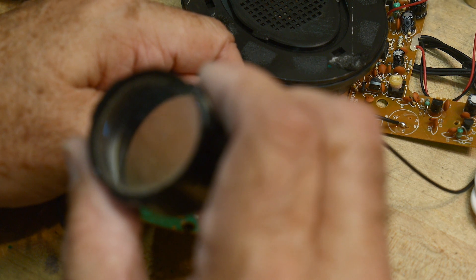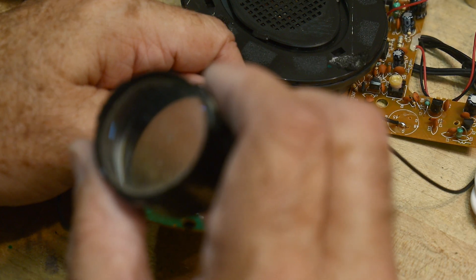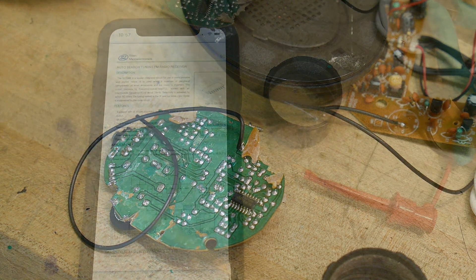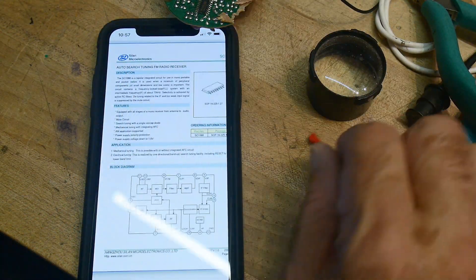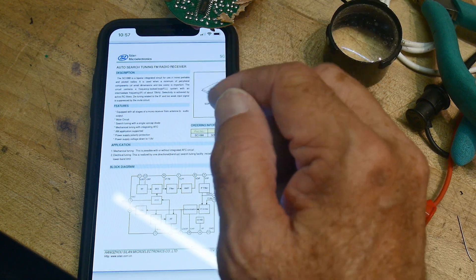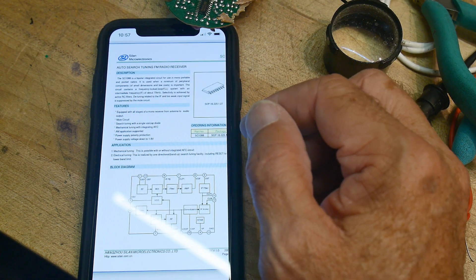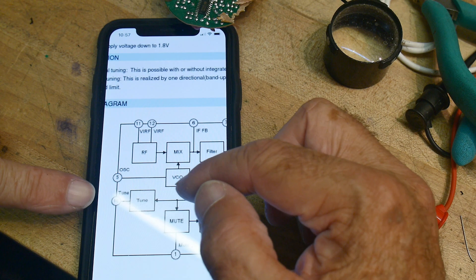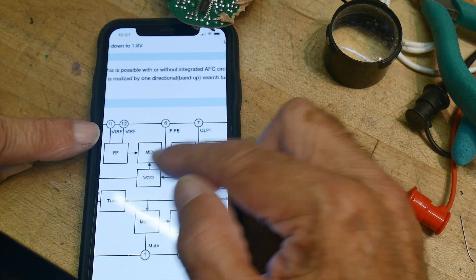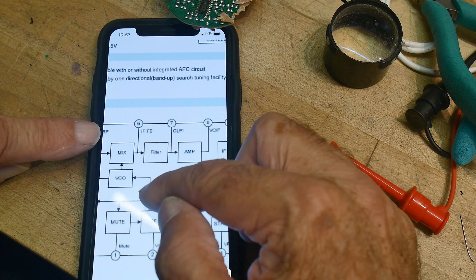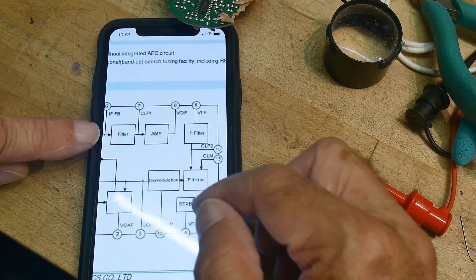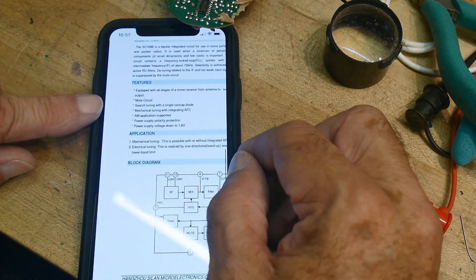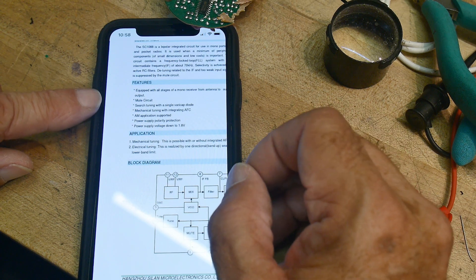It is a SC1088. SC1088. Let's see if you can find that. Cilan. Cilan? Cilan? Microelectronics? AutoSearch Tuning FM Radio Receiver. There you go. Here's block diagram. I got some tune oscillator. RF comes in. There's a mixer. VCO. Goes into a filter and amplifier. Yeah, it looks like a radio demodulator. SOP16 package. Search tuning with single VeriCap diode.